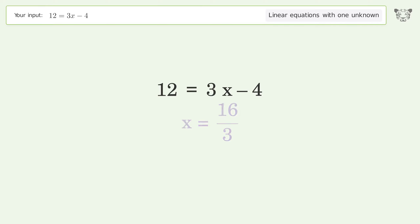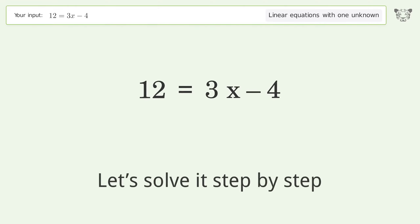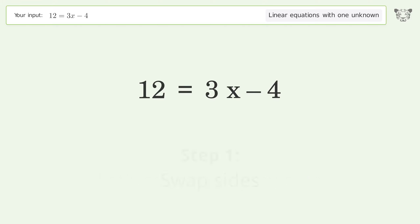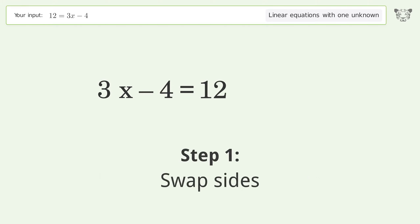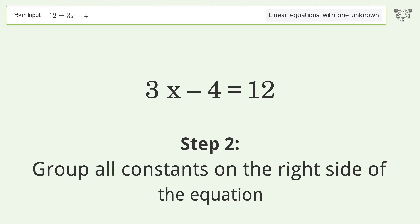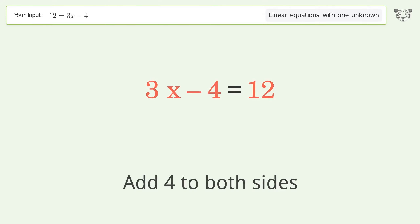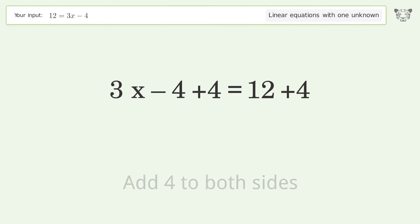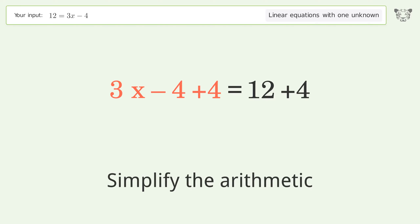Swap sides and group all constants on the right side of the equation. Add 4 to both sides and simplify the arithmetic.